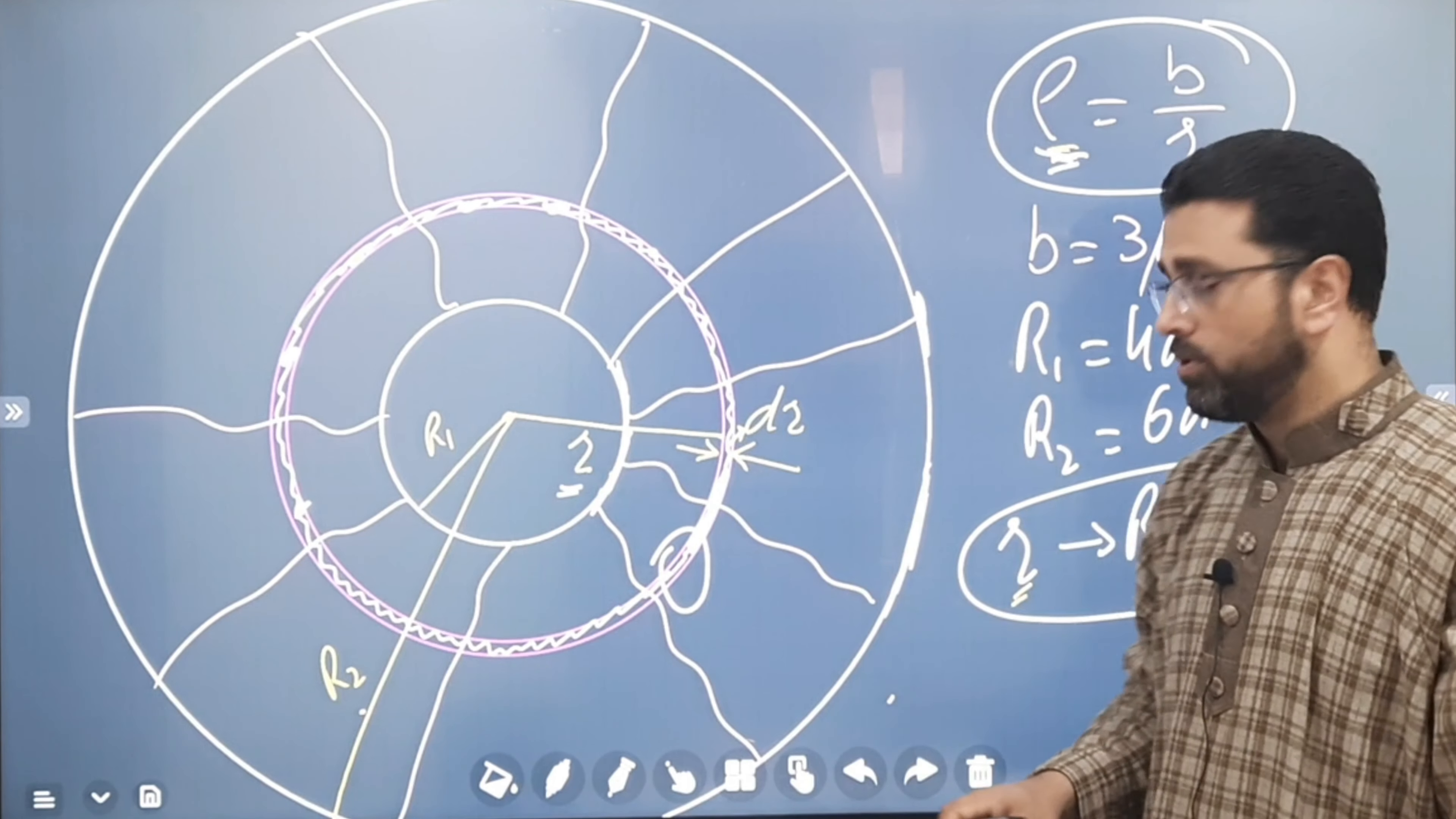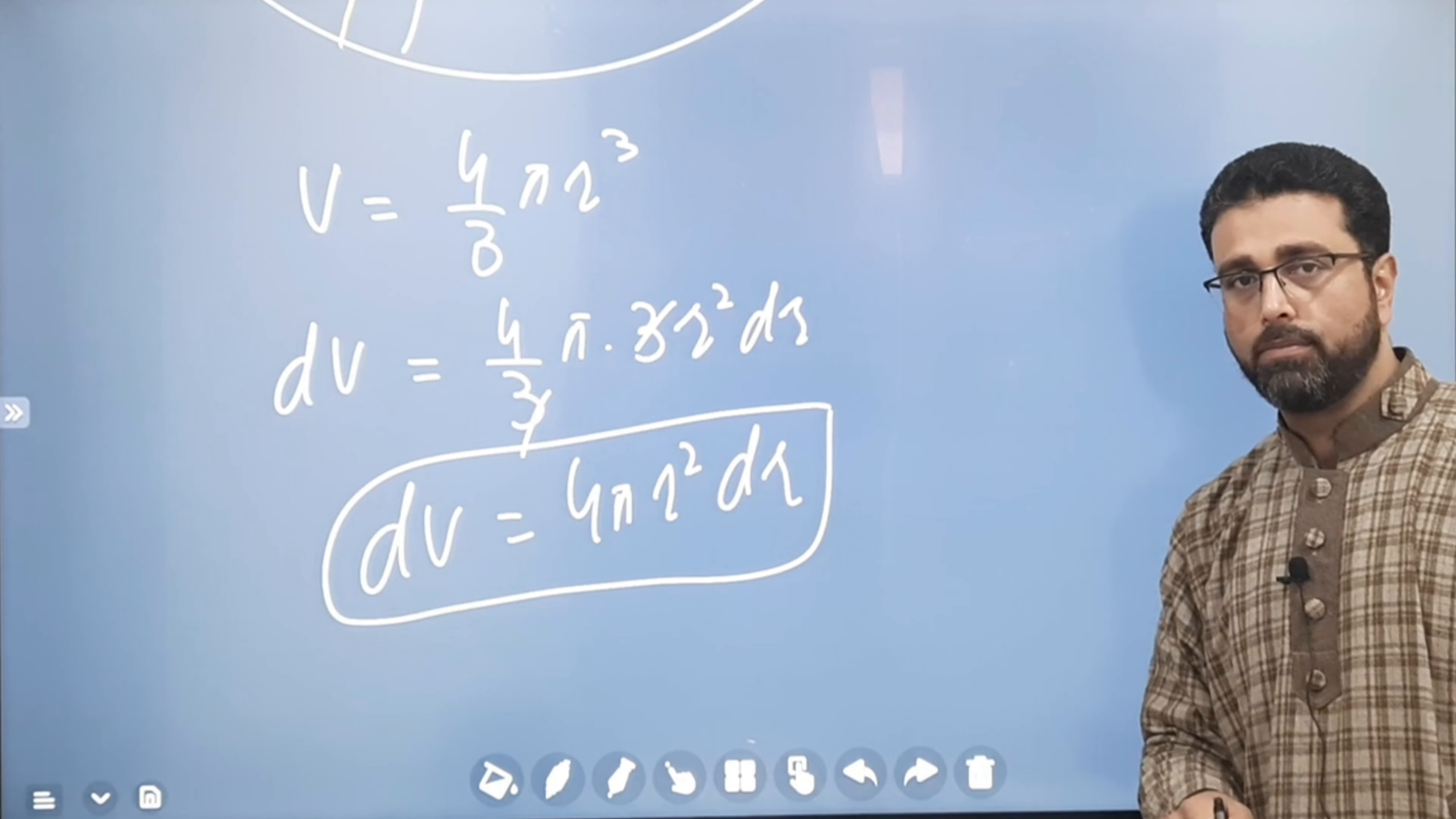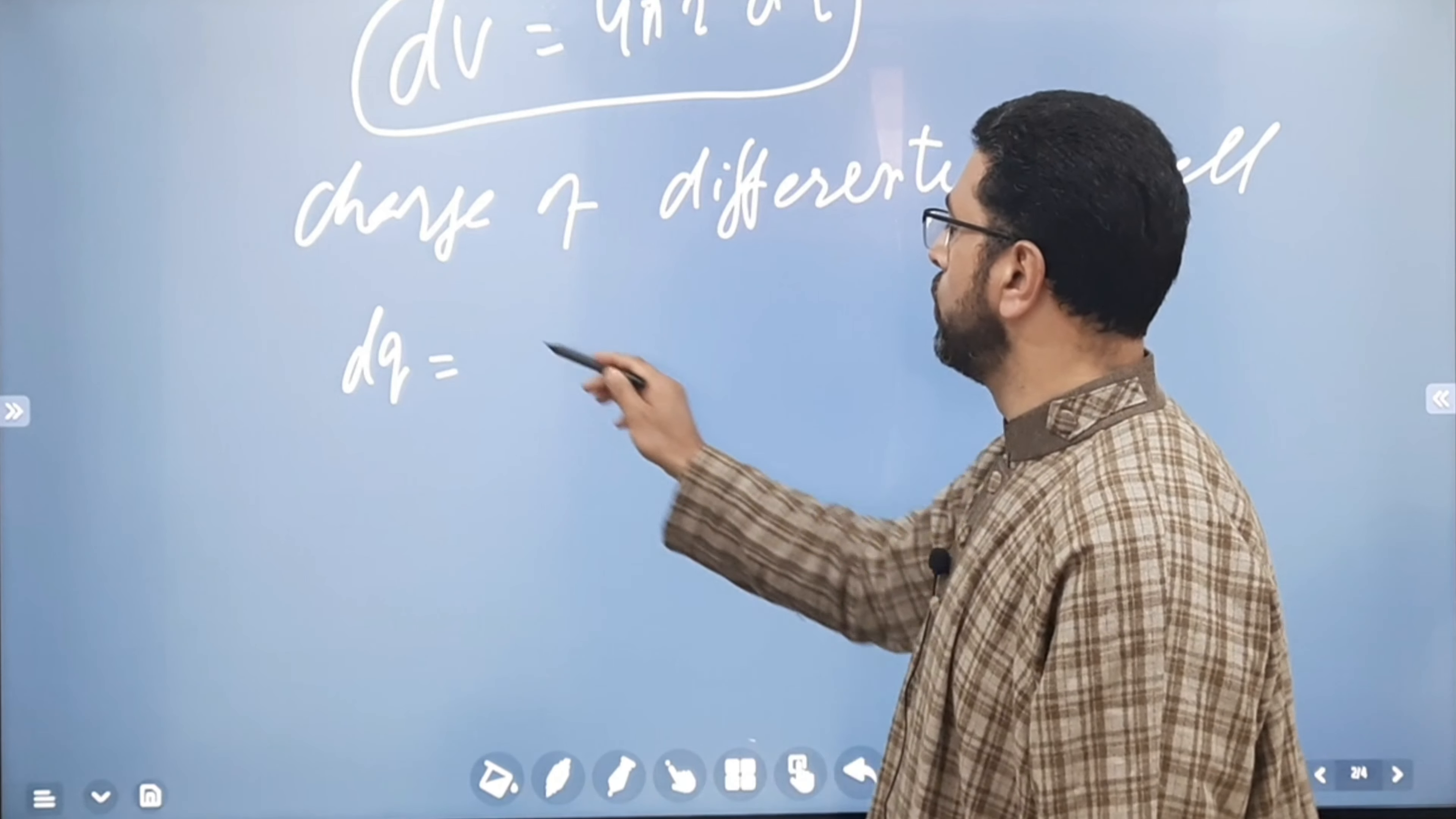Charge of this shell will be simply density into volume of this shell. Now, what is volume of the shell equal to? When a volume of a sphere is 4 by 3 pi R cube, then the differential volume, which will be volume of the spherical shell, will be 4 by 3 pi into R cube differentiation, 3 R square dr. 3 and 3 will cancel out. So, dV is equal to 4 pi R square dr. This is volume of the differential shell. Charge of differential shell, dQ, is equal to rho into dV.